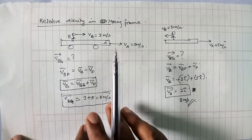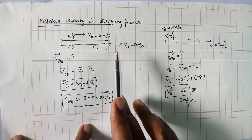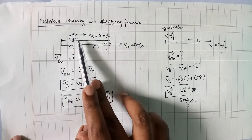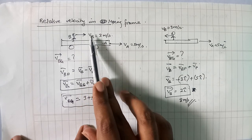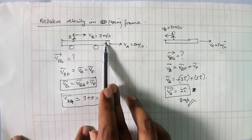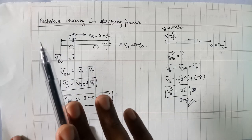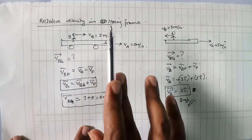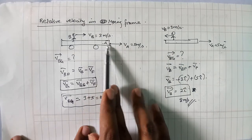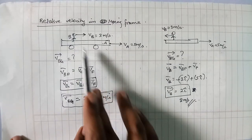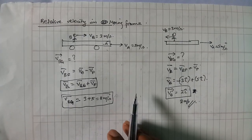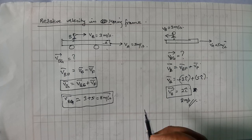The velocity of VB with respect to the moving frame equals the velocity of VB with respect to ground minus the frame velocity. By default, if you want to find velocity with respect to the ground, you add the two velocities; in the opposite direction, you subtract. This is very simple. Relative velocity in 2D will be covered in the next video.